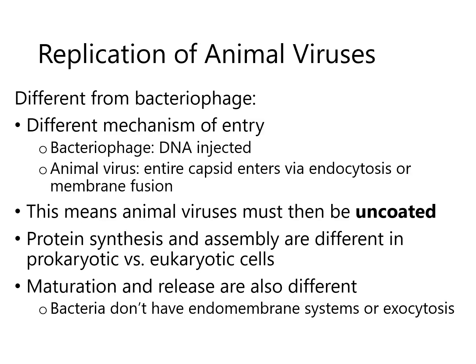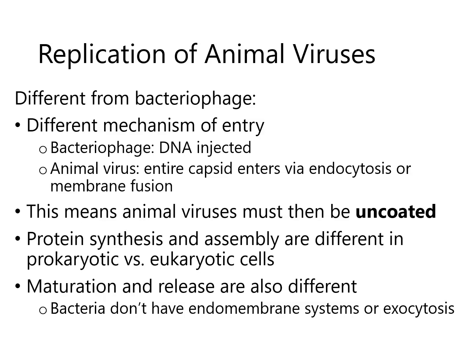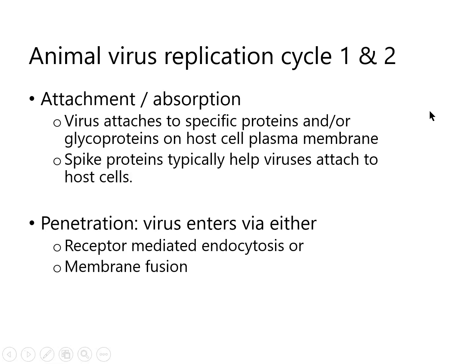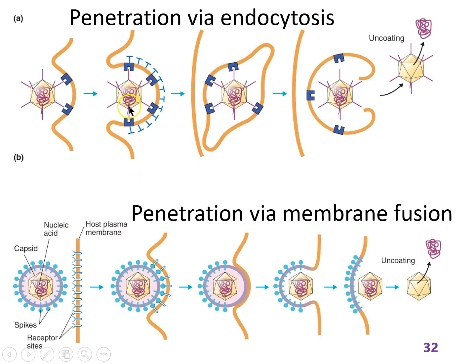Animal viruses have the same general goal as bacteriophage — they want to make more virions — but they have to take control of a different kind of cell to do it. That means they add a completely new uncoating step. Two entry situations are shown in diagrams: the cell membrane drawn in two different ways to illustrate the two different ways animal viruses get into cells.